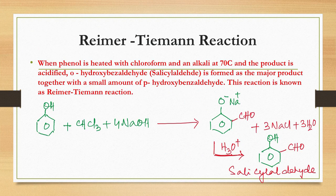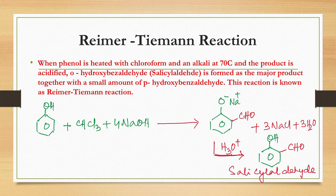Reimer-Tiemann reaction: very important — asked in CHSE 2020 exam. When phenol is heated with chloroform and aqueous alkali at 70°C, and the product is acidified, it gives salicylaldehyde (orthohydroxybenzaldehyde) as the major product, along with a small amount of parahydroxybenzaldehyde. The electrophile here is dichlorocarbene, formed when chloroform (whose H atom is acidic) reacts with alkali to give CCl₃⁻, which then loses Cl⁻ to form dichlorocarbene — a neutral electrophile.